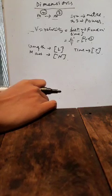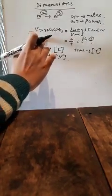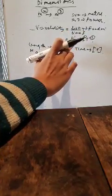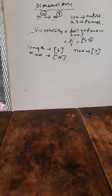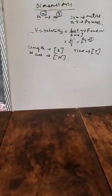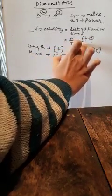So, if you just look at the dimensions of a quantity, you will know which fundamental quantities they are related with and how they are related. Talking about velocity — what are the fundamental quantities used in velocity? Two fundamental quantities: distance and time. So we know that two fundamental quantities are used in the derived quantity velocity. But how are they related in this derived quantity? They are related like this: L to the power 1 and T to the power minus 1.